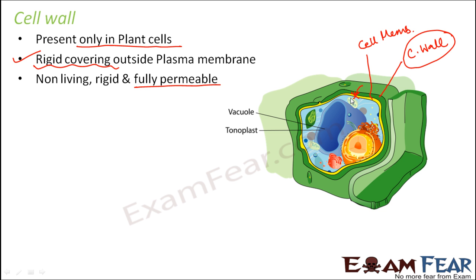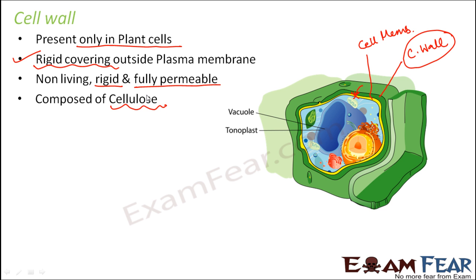Cell wall is not living and it is rigid. It is just to provide rigidity or mechanical support to the plant cells — that is the purpose of the cell wall. It is composed of cellulose, which is the main component. In the case of cell membrane, it was made up of lipids and proteins, but here it is made up of cellulose.